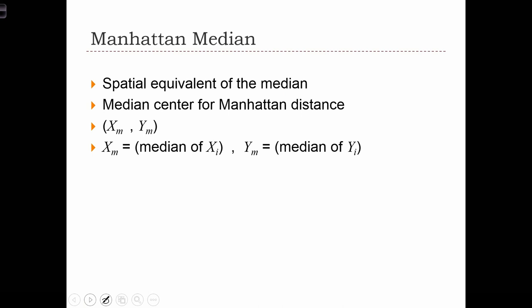Based on the Manhattan distance, we can introduce a new type of central tendency measure called the Manhattan median. We actually saw this very briefly when we looked at the influence of outliers on the mean center statistic.